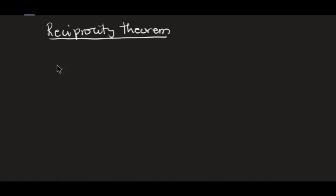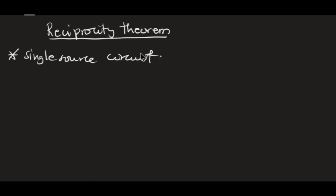The reciprocity theorem is applicable to only single-source circuits. So for you to apply the reciprocity theorem, the circuit you are dealing with should have only one source in it. Now the reciprocity theorem can be stated in two ways.